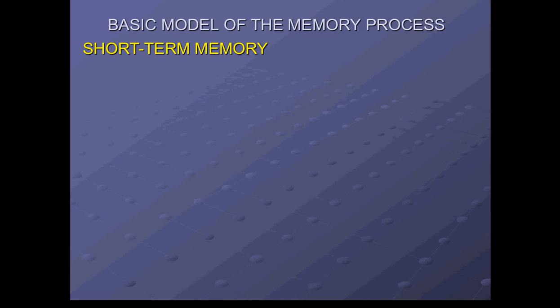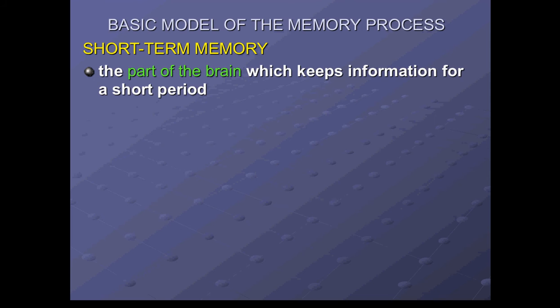In terms of short-term memory, that's the part of the brain which keeps information for a short period of time, between 20 to 30 seconds after it's been deemed worthy of attention during the selective attention process. The short-term memory can carry between five and nine separate items of information.